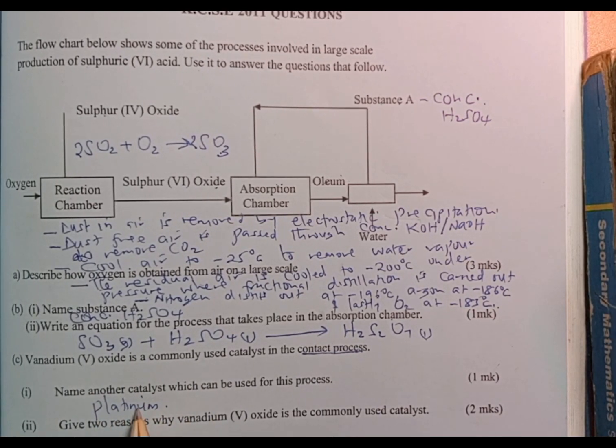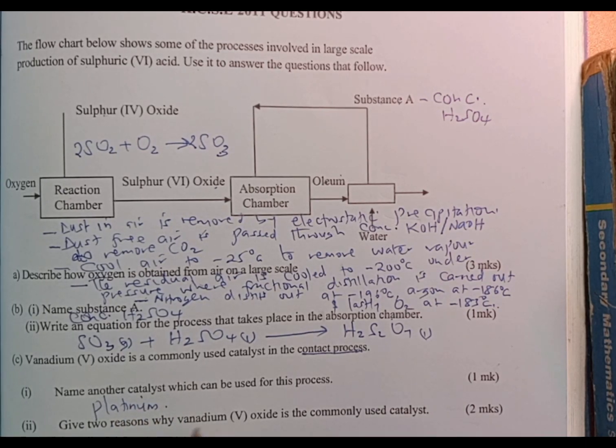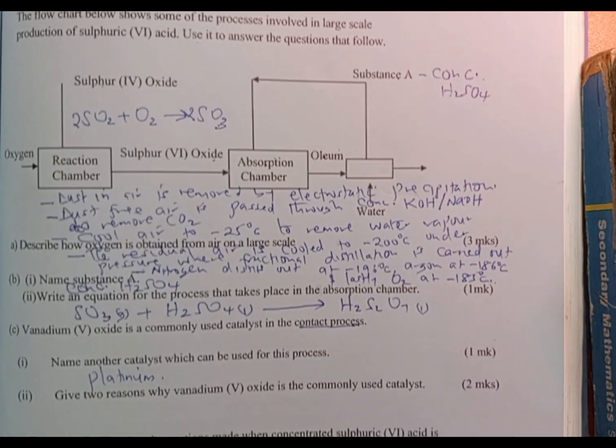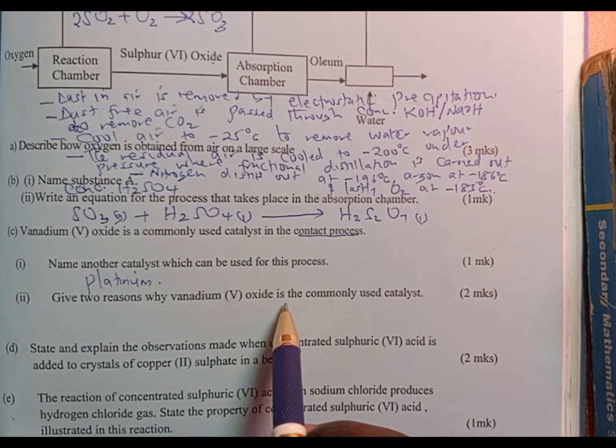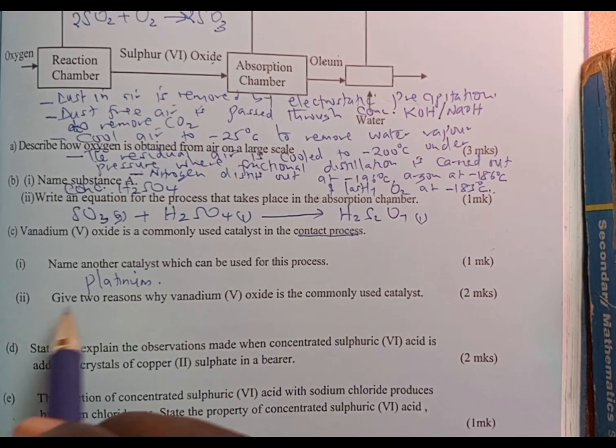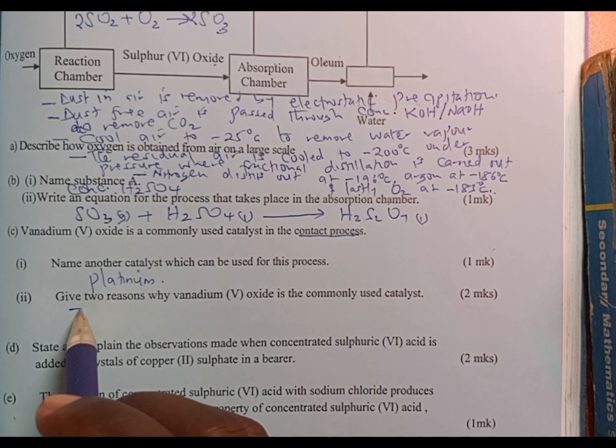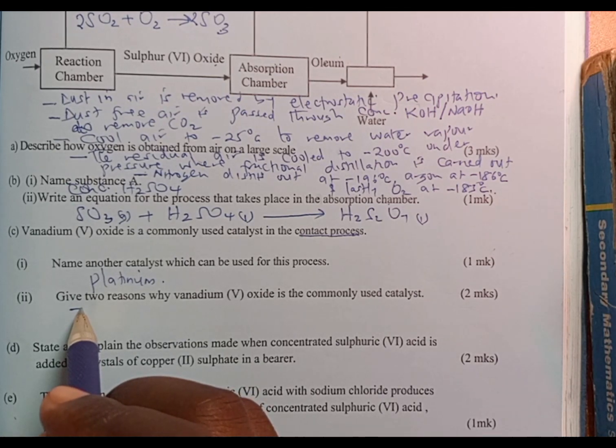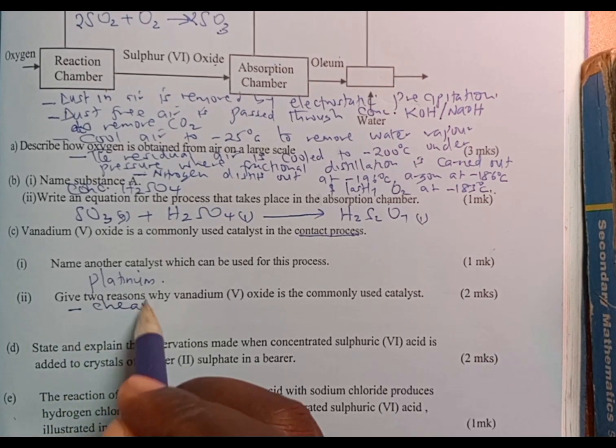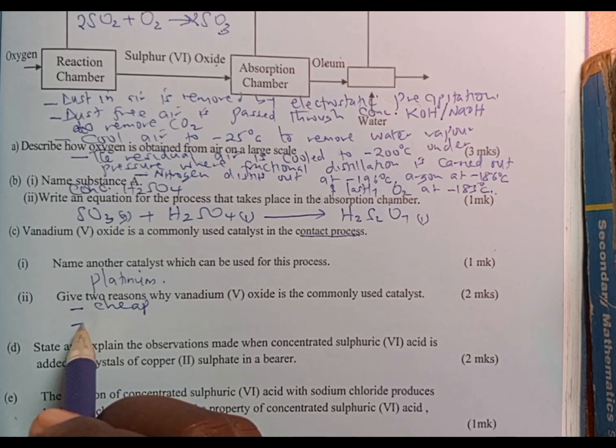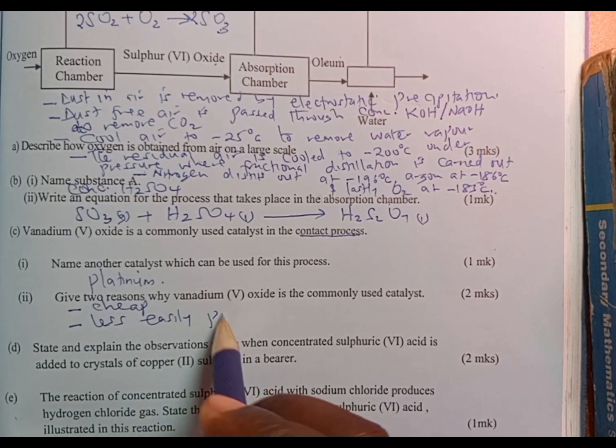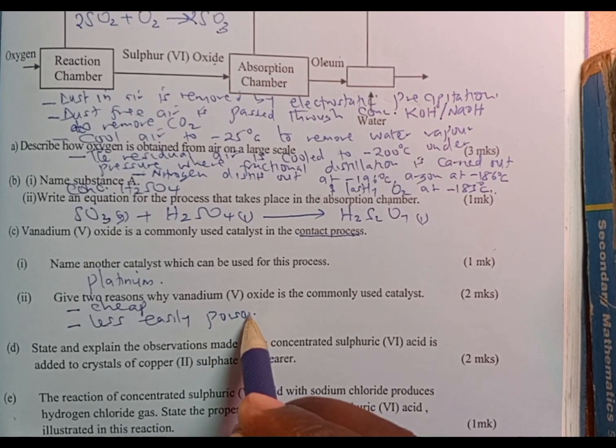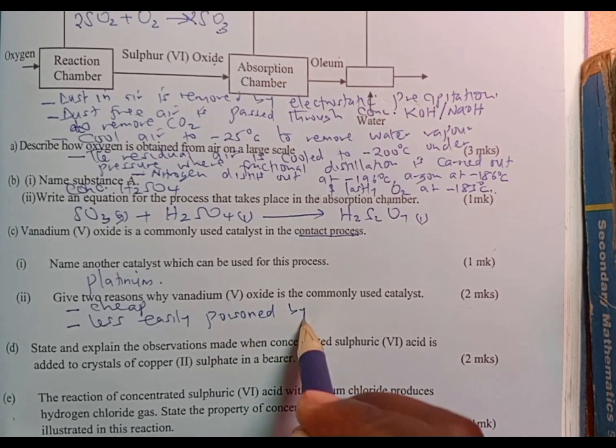However, platinum has one disadvantage - it is very expensive. Part 2: give two reasons why vanadium pentoxide is commonly used as the catalyst. One is that this catalyst is cheap compared to platinum. Number two, it is less easily poisoned by impurities.